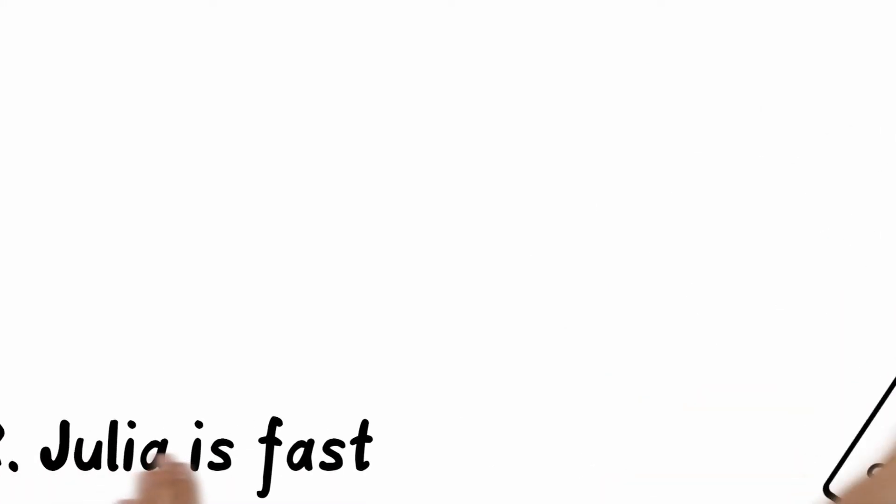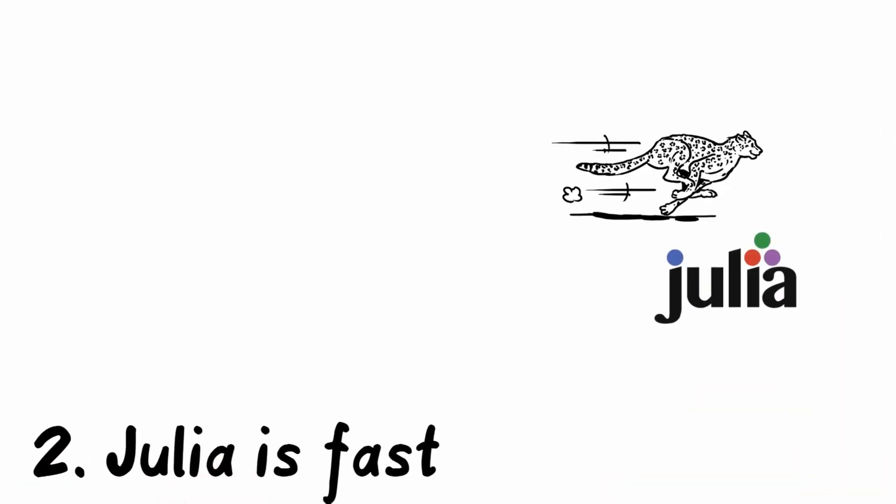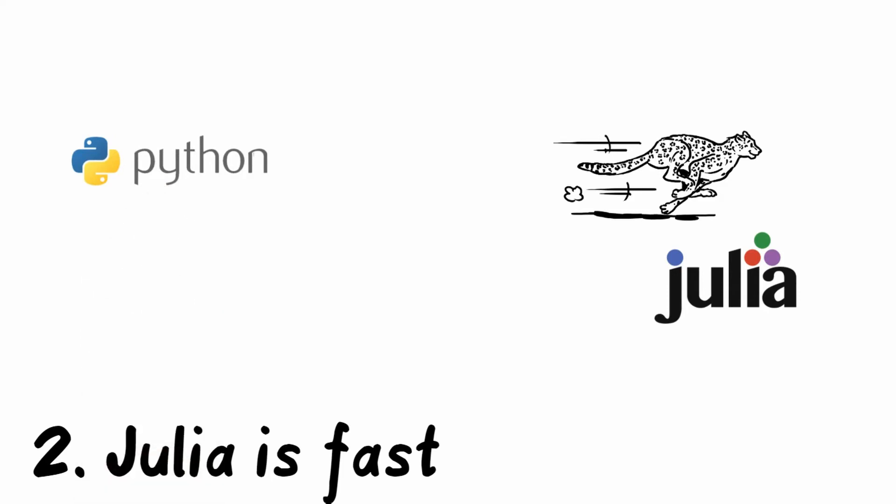2. Julia is super fast. While other dynamic languages like Python are relatively slow in comparison with static languages like C, Julia is not. It is almost as fast as C.